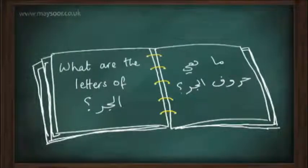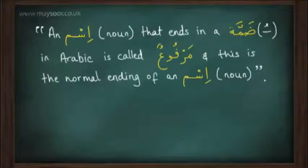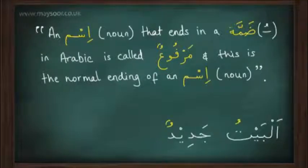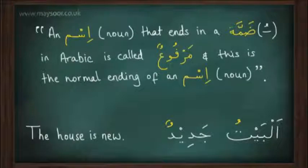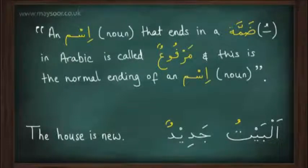What are the letters of jar? Maa hiya huroofu al-jar? An ism — a noun — that ends in a dhamma in Arabic is called marfoo'. This is the normal ending of an ism in Arabic. For example, al-baytu jadeedun means 'the house is new'. In this example, both words, al-baytu and jadeedun, are referred to as marfoo', because they both end in a dhamma. So we can refer to any one of these two nouns as ism marfoo' — a noun that is marfoo', ending in a dhamma.